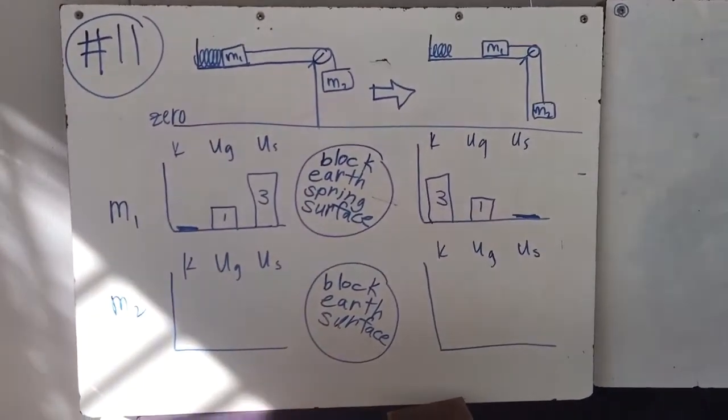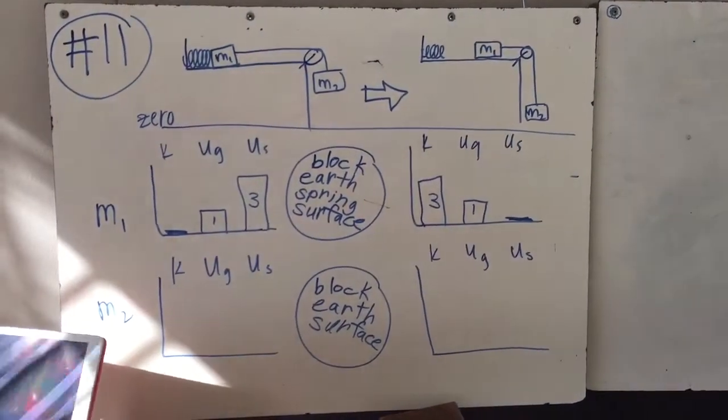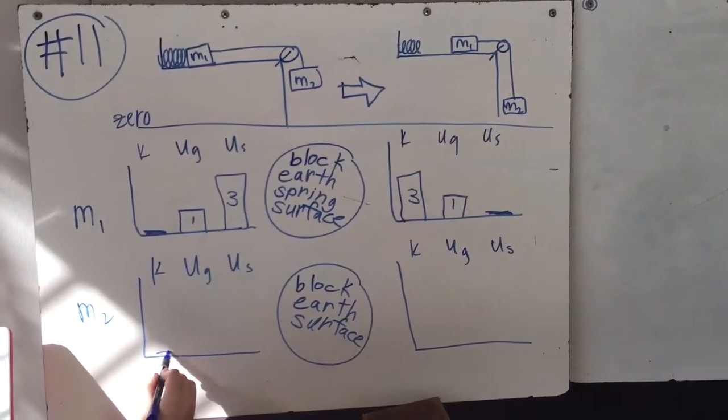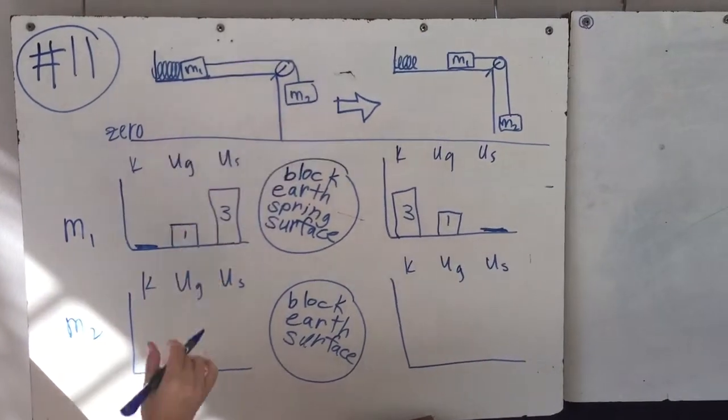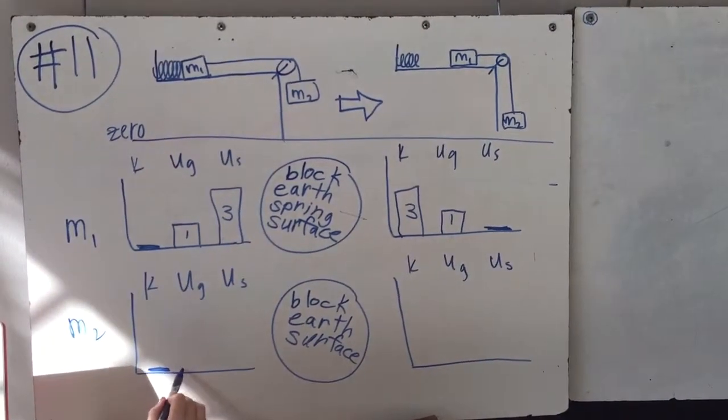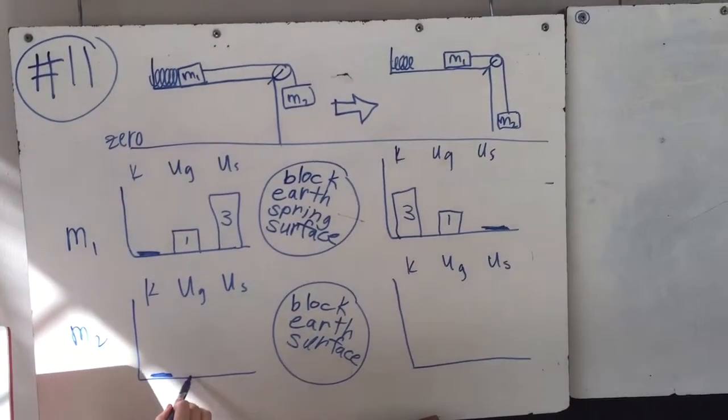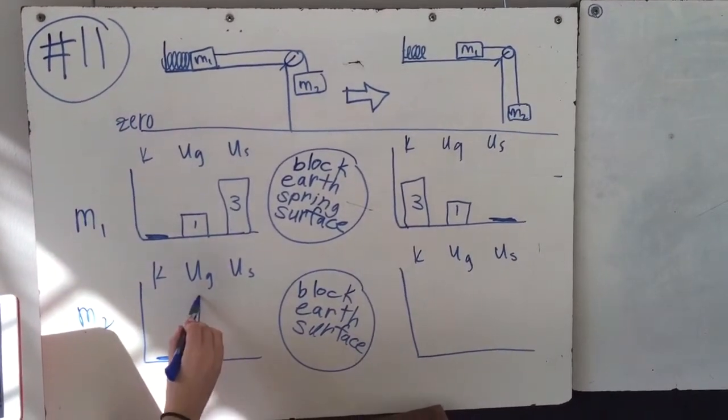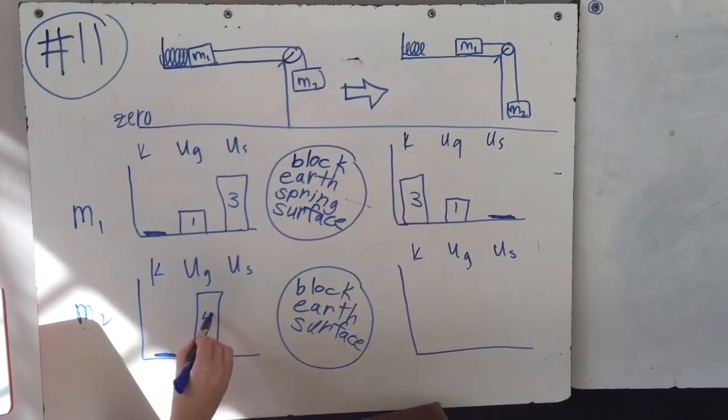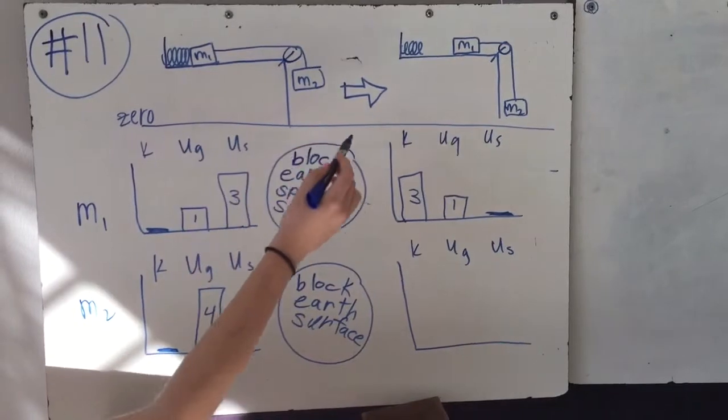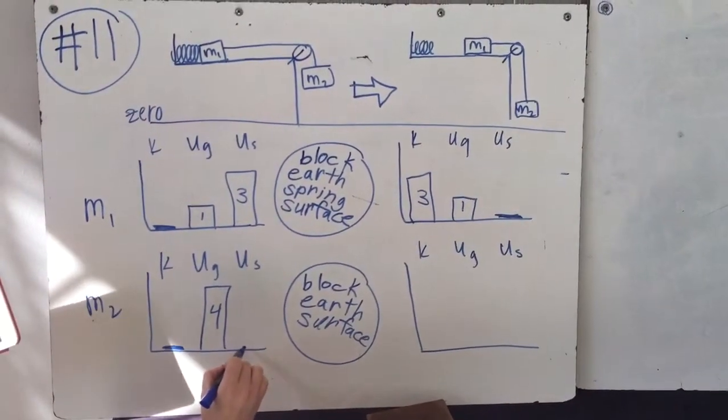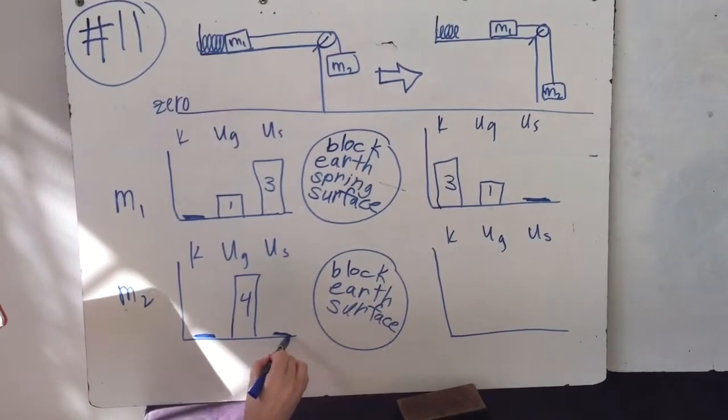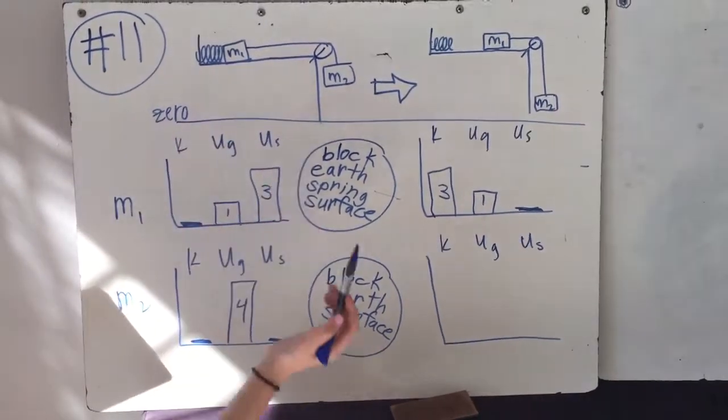So for mass 2, there's no kinetic energy as well because it's stopped at that point, it's not moving. And then once it starts, then there's going to be potential energy of 4 because there's a height. And then there's no potential energy for the spring because it's not attached to the spring, because it's mass 2.